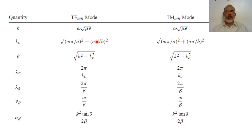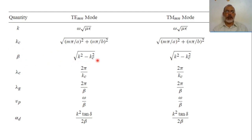This is called degenerate modes, and we will discuss what is meant by degenerate modes later. The propagation constant beta equals the square root of K² minus Kc², and this is also the same for both transverse electric and transverse magnetic modes.